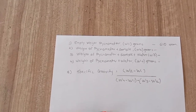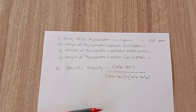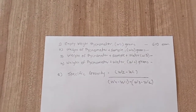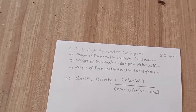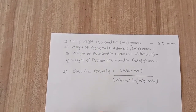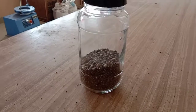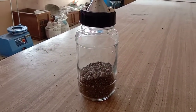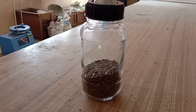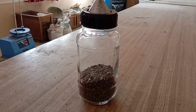Now I am going to take the sample — the fine aggregates whose specific gravity we want to calculate. I will take a sample and insert it into the pycnometer up to one-fourth of its volume. Here I have filled the fine aggregates into the pycnometer up to one-fourth. Now I am going to take the weight of this pycnometer plus sample.